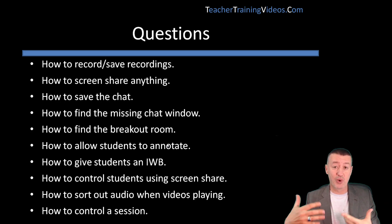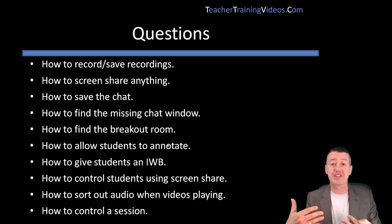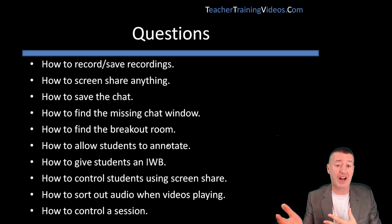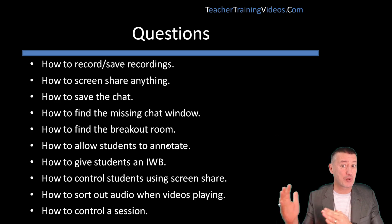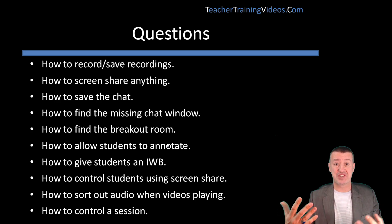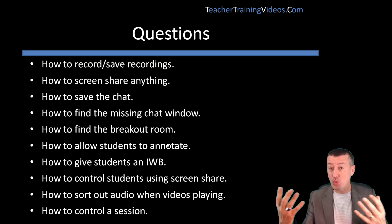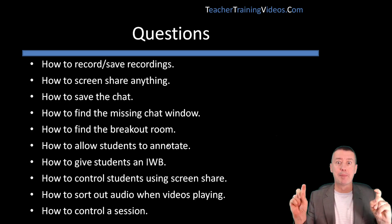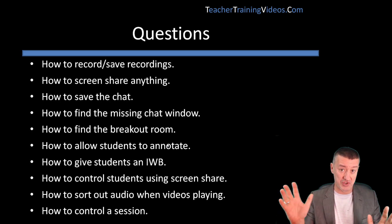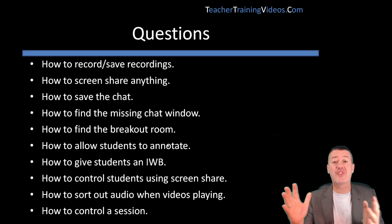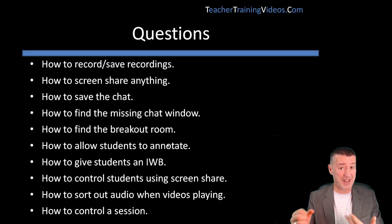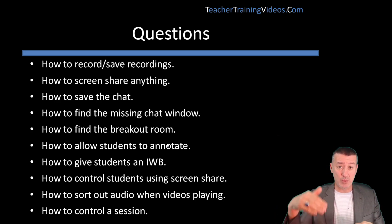It's going to deal with more than 10 questions but should cover most things coming up. How do you record a Zoom session? How do you save it and where can you find the file? How do you screen share everything? What do you do if you forgot to set something up and you're in the middle of a Zoom and you suddenly want to screen share but it's not open? How do you save the chat, where is it saved, and can you automatically save the chat? How do you find the missing chat window — this happens when you go to full screen.